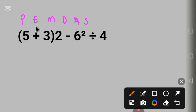Following this PEMDAS, the first one here is parentheses. Looking at this place we have a parenthesis here, 5 plus 3. 5 plus 3 is 8 times 2 minus 6 squared divided by 4.